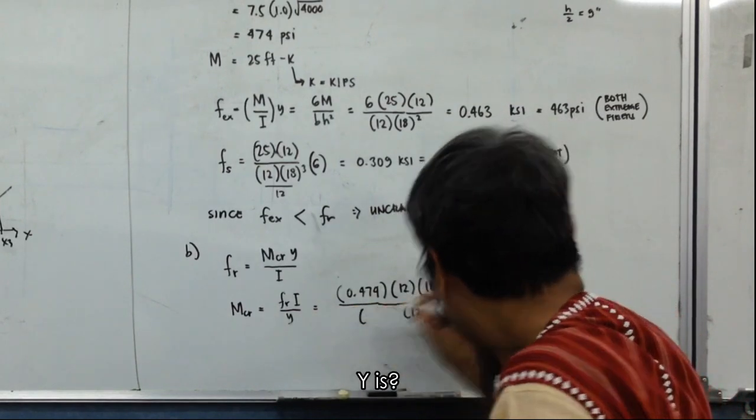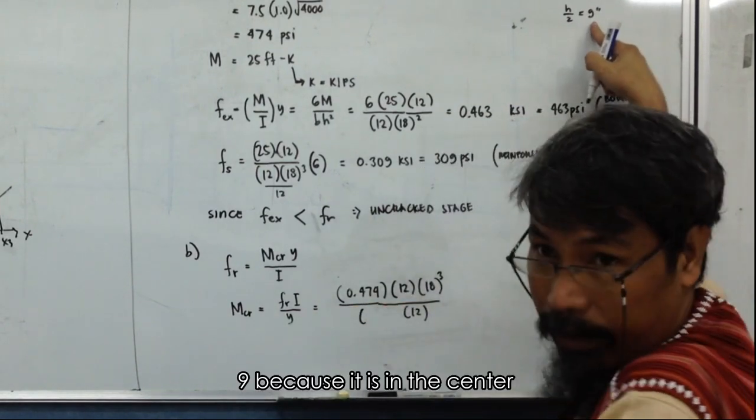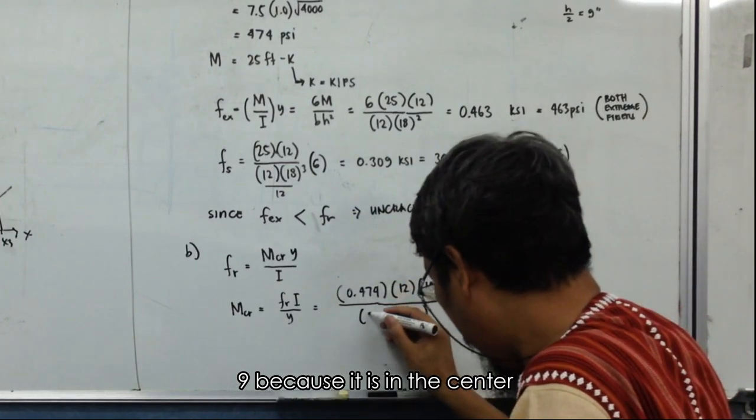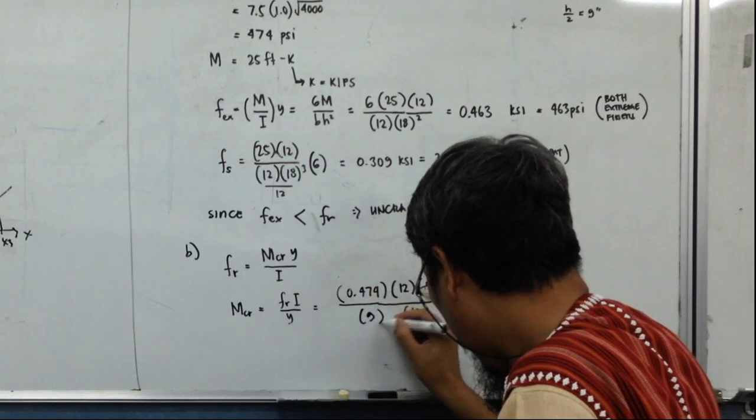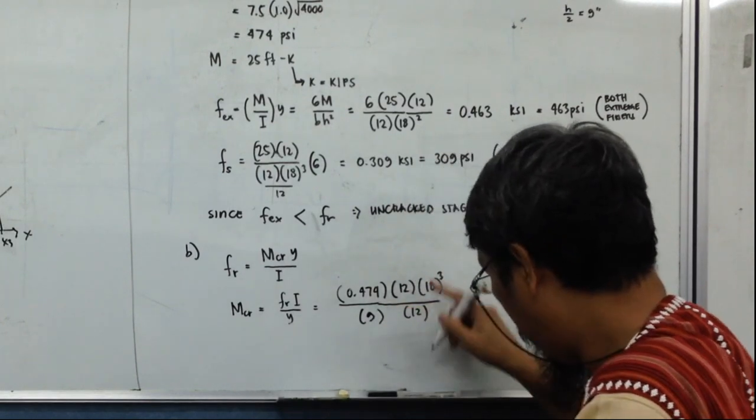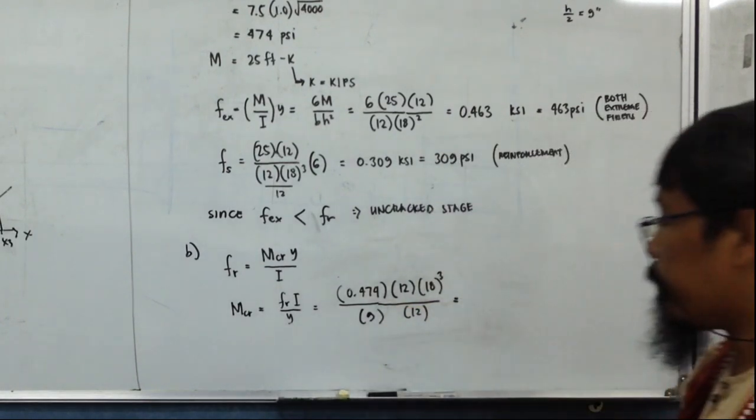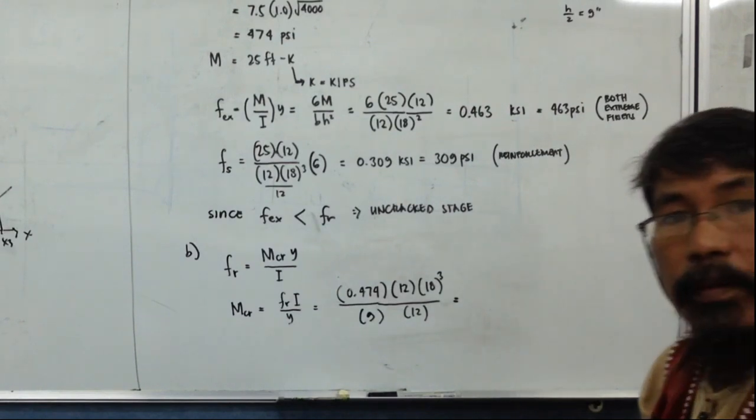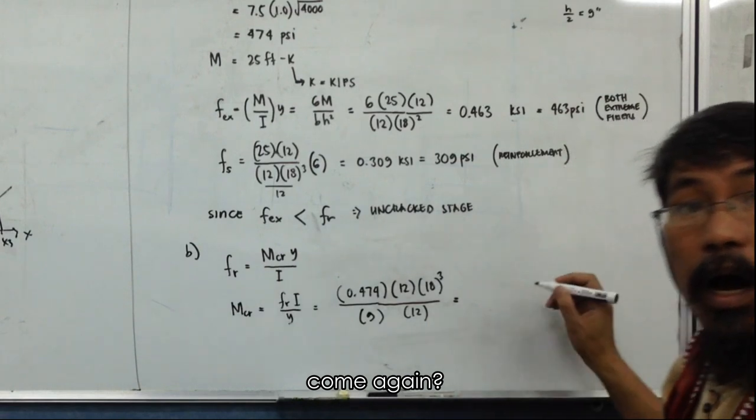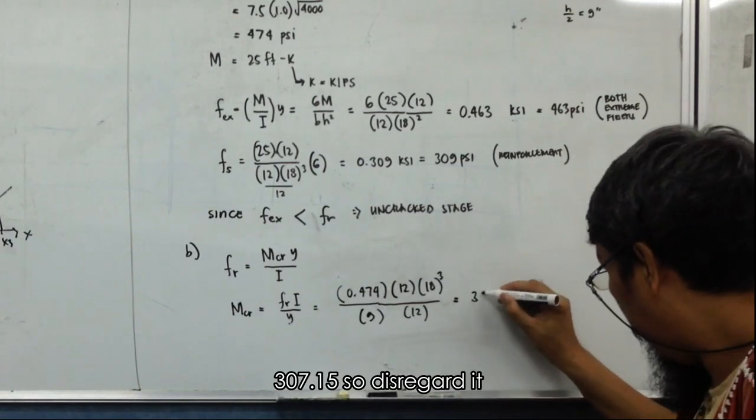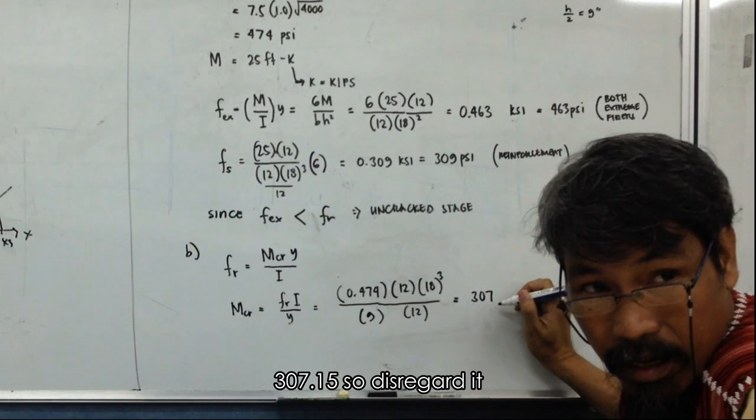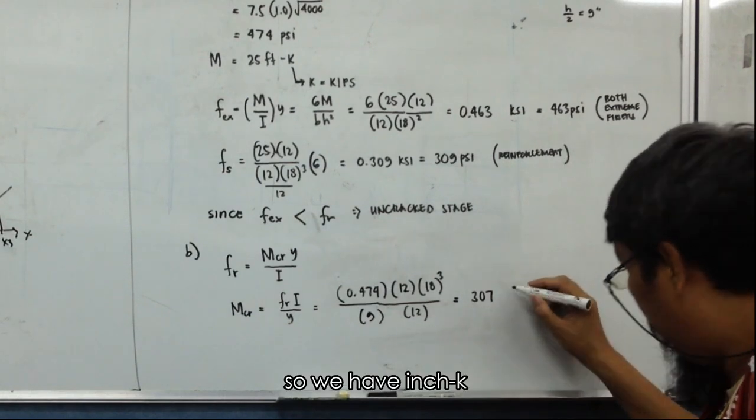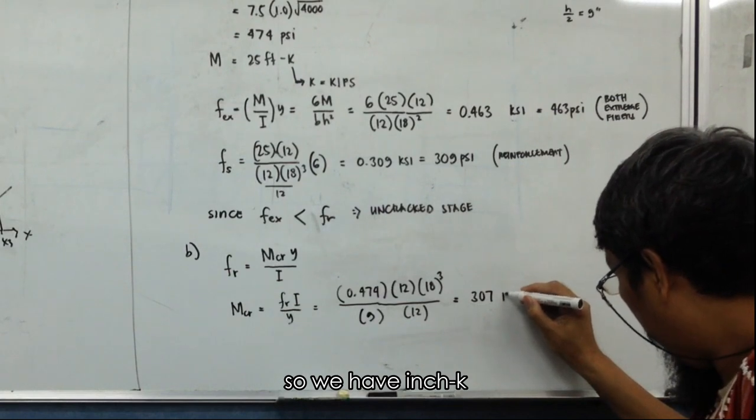So BH cube over 12, that is 9. Where is the Y? Y is 9 because it is in the center, no? So how much is this? 307.15. So we have.